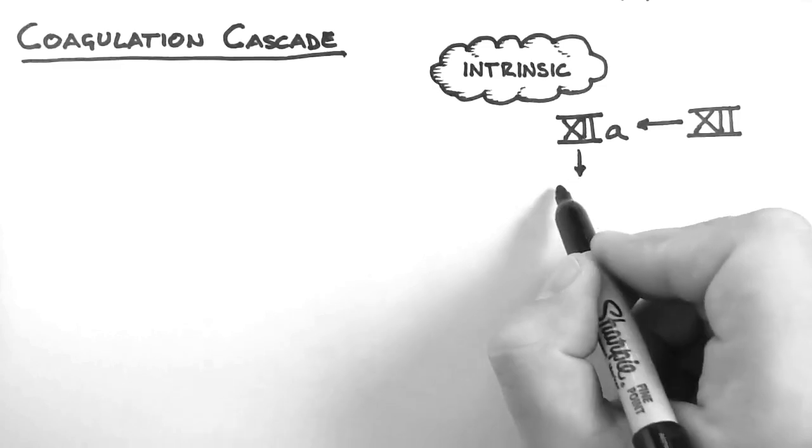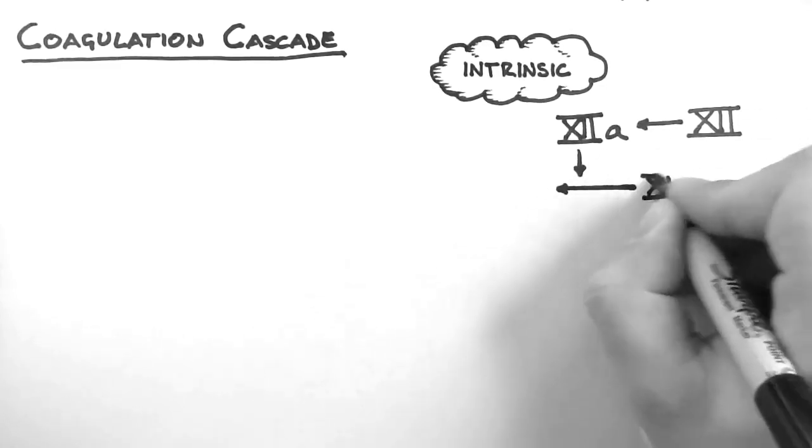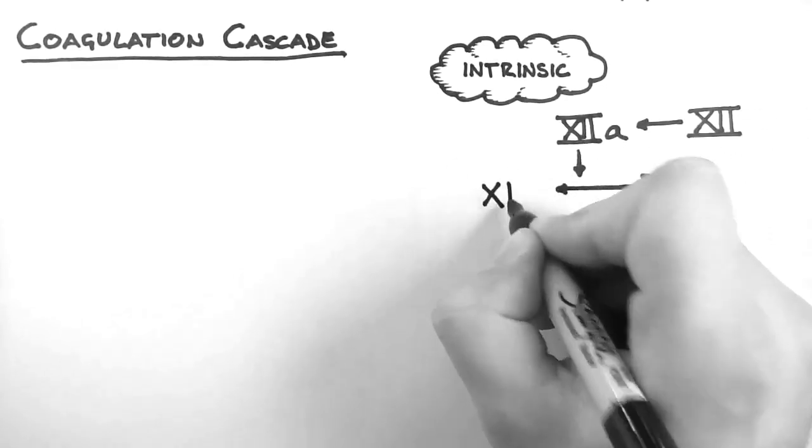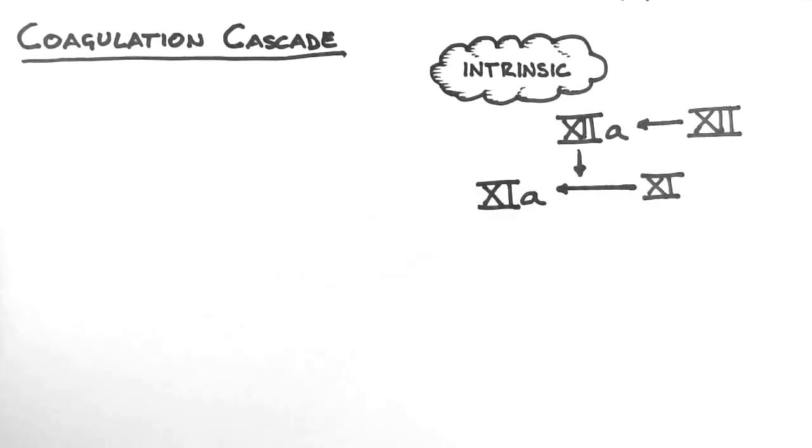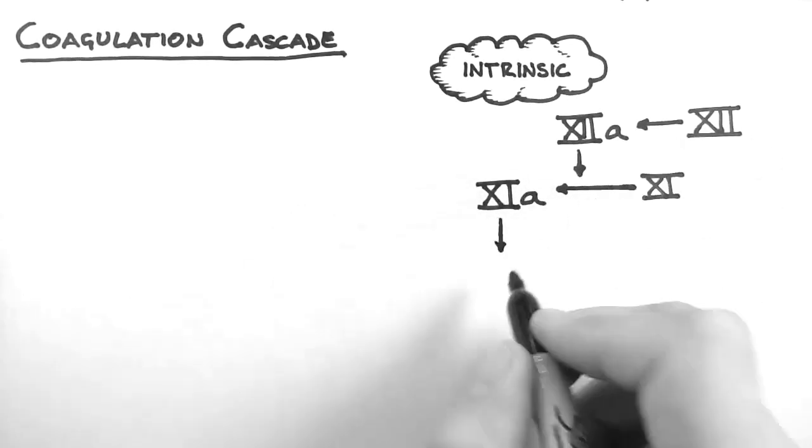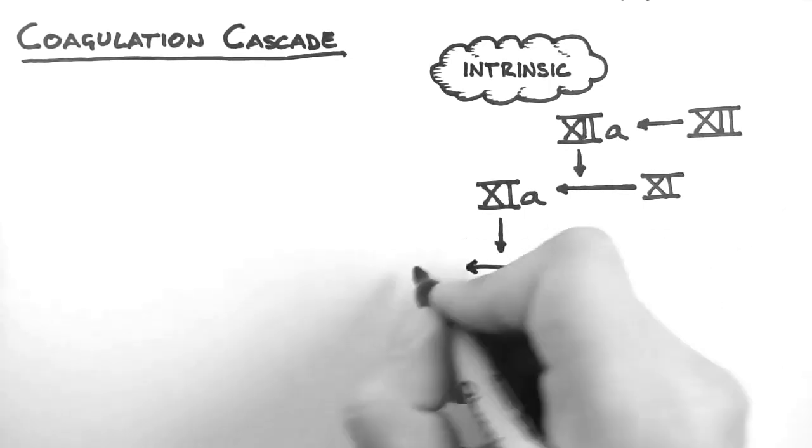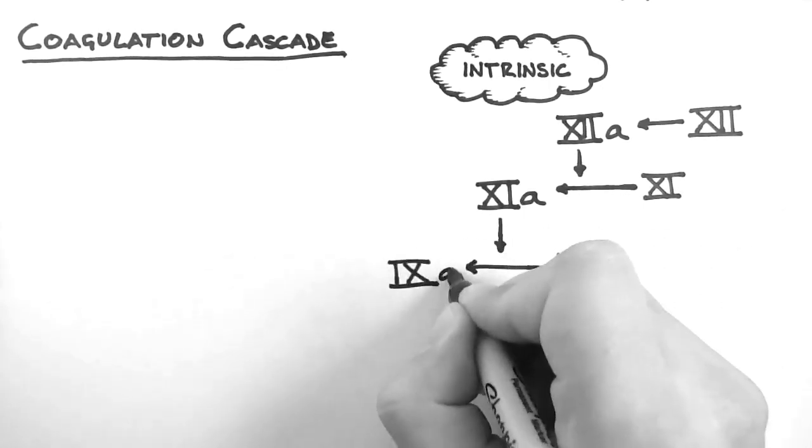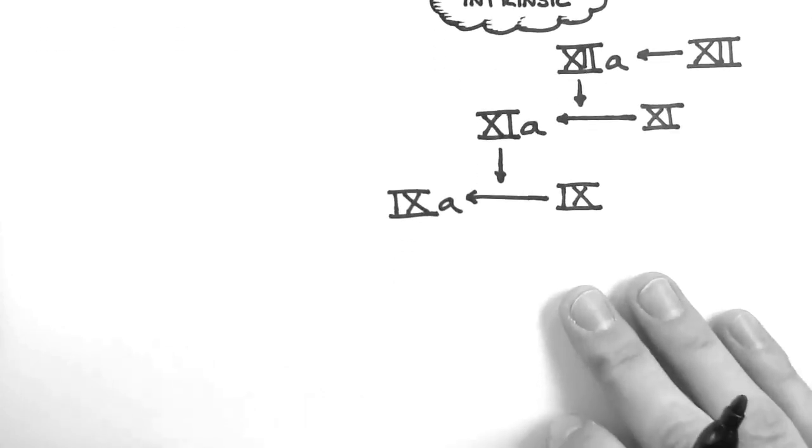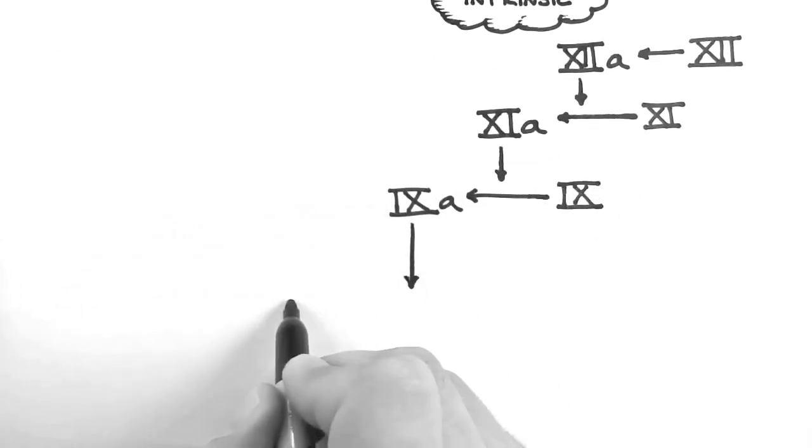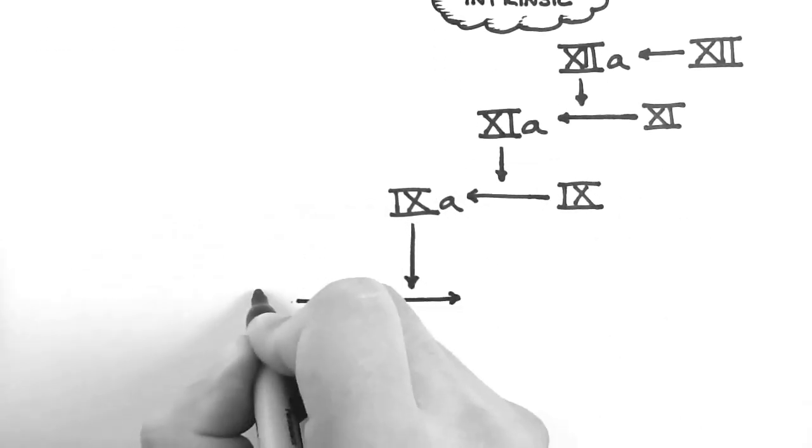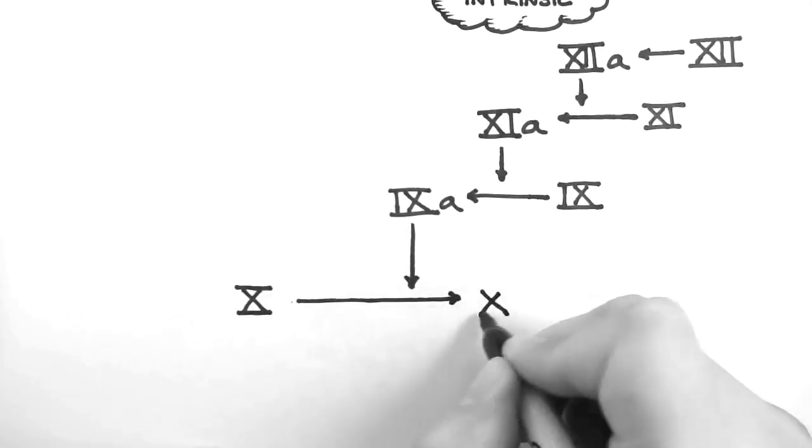Now factor 12a causes the conversion of factor 11 to factor 11a. Factor 11a then in turn converts factor 9 into factor 9a. Factor 9a then converts factor 10 into factor 10a.